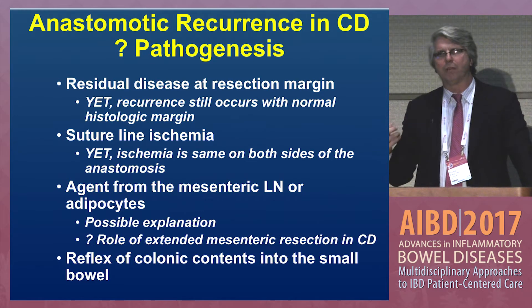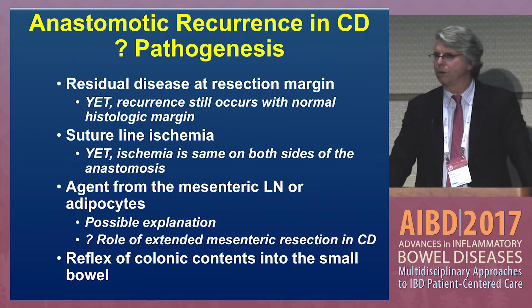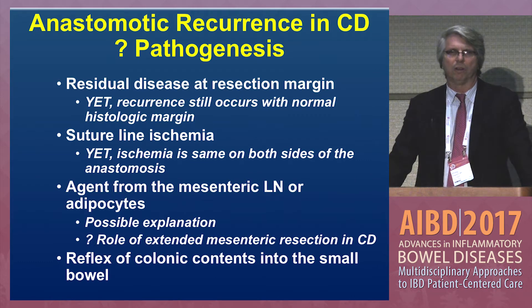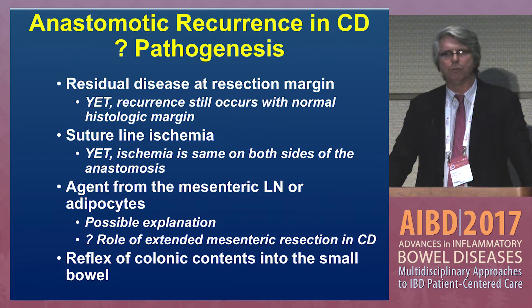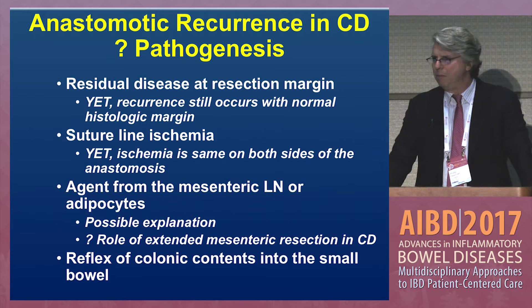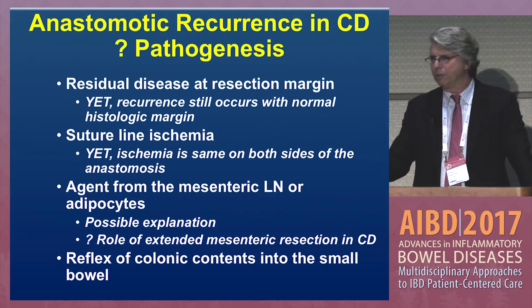These are some of the mechanisms proposed to figure out why these anastomoses recur. One logical reason is that maybe there's residual disease at the resection margin — but recurrence still occurs with a normal histologic margin, so probably that plays a role, but maybe not the fundamental role. Suture line ischemia: there is suture line ischemia at the anastomotic line, but the same amount of ischemia occurs on the proximal and distal side, so that probably shouldn't make a difference. Maybe it has something to do with the mesenteric lymph nodes or adipocytes.